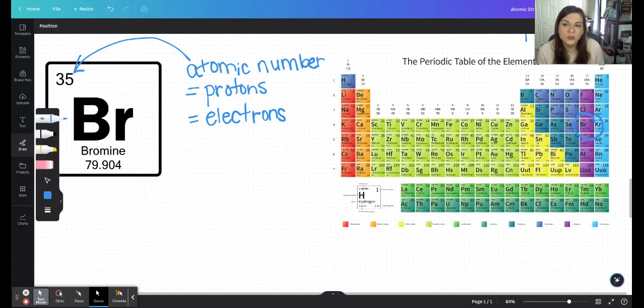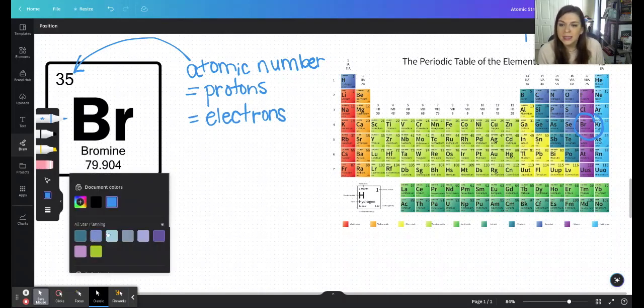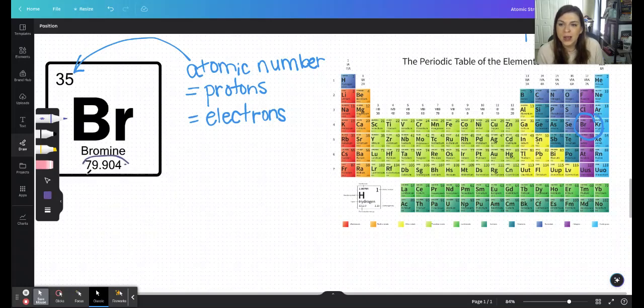Now, to figure out the number of neutrons, what we will want to do is take this mass and round this to a whole number. If we take 79.9 and round it to a whole number, we would have 80. So this number is called the average atomic mass. And I don't know if you know, but there are a lot of bromines out in the world. And what we have done to come up with this number is collect a lot of bromine, and then the chemist will put it into something called a mass spectrometer.